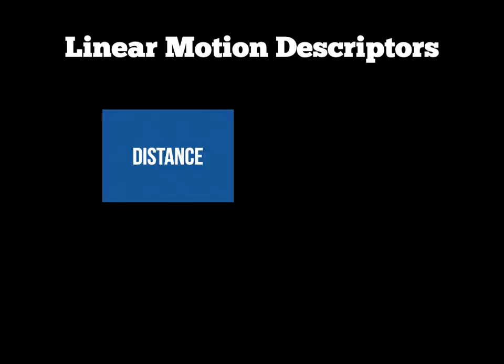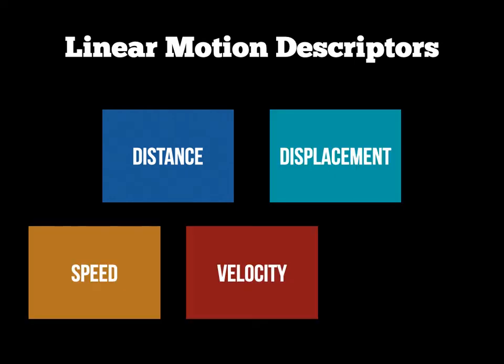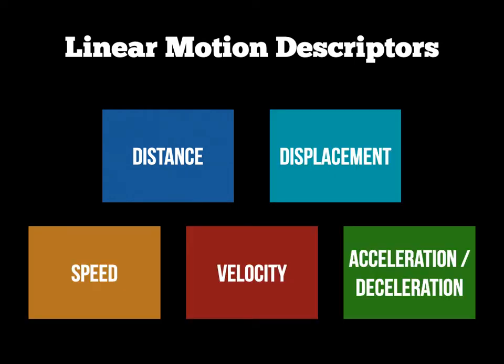In exam questions, you're often asked about factors that help define linear motion, which we call descriptors. These are: distance, displacement, speed, velocity, and either acceleration or deceleration. For your exam, you'll need to define them and be able to use them in a sporting example or calculation.